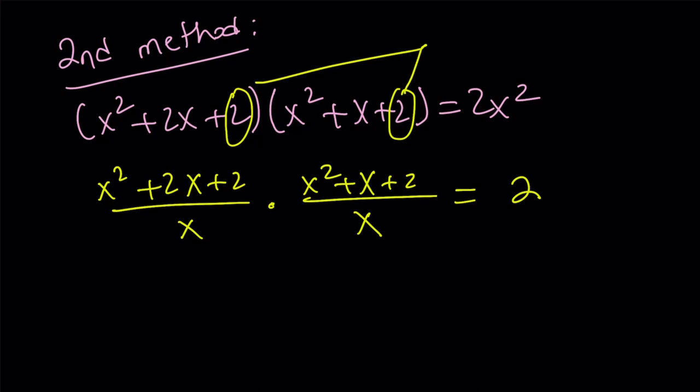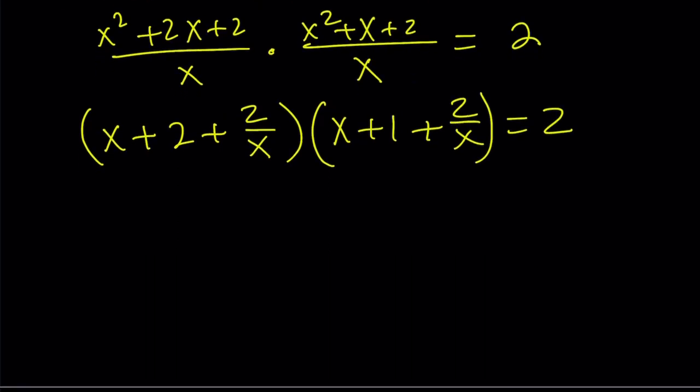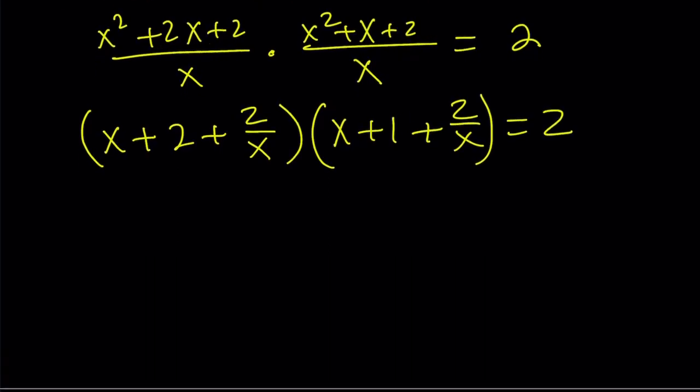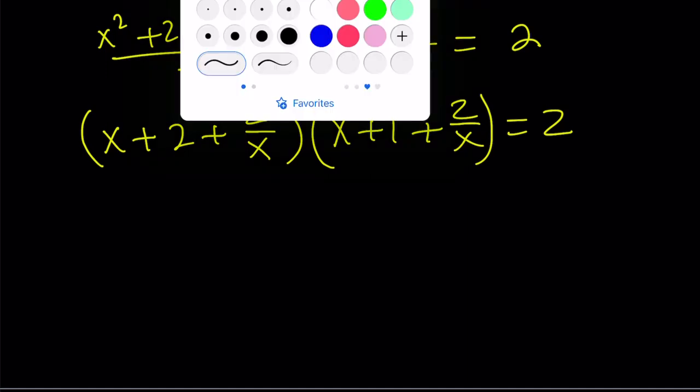This allows us to manipulate the equation in the following way. I'm going to divide this by x, and divide the other one by x, which is the same thing as dividing both sides by x², and we end up with a constant on the right-hand side. x equals 0 is not a solution, so we don't have to worry about it. So if you go ahead and separate this, x + 2 + 2/x, multiplied by x + 1 + 2/x, and this is where the awesome substitution comes in. Yes, if you said x + 2/x will be replaced with something, you got it right.